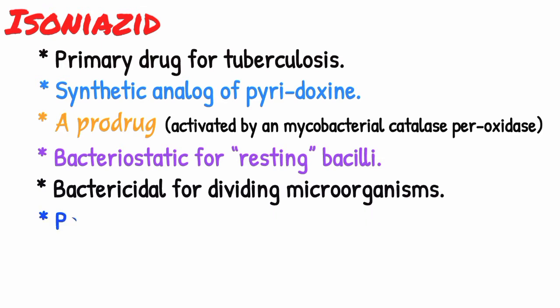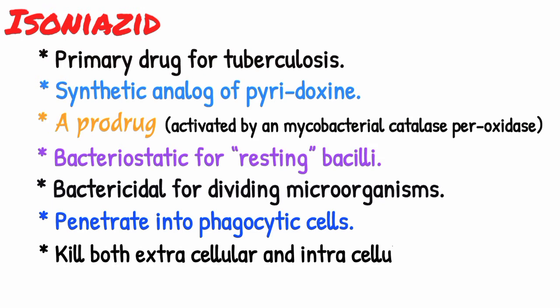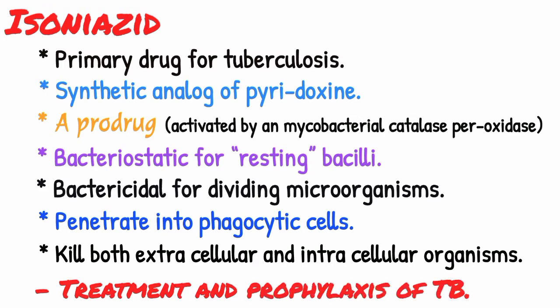Isoniazid is able to penetrate into phagocytic cells and it can kill both extracellular and intracellular organisms. Thus, it is used in treatment and prophylaxis of TB.